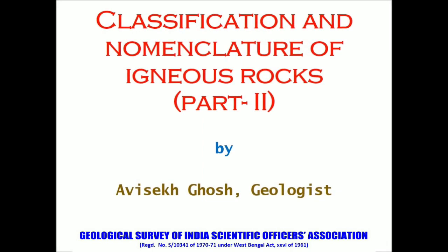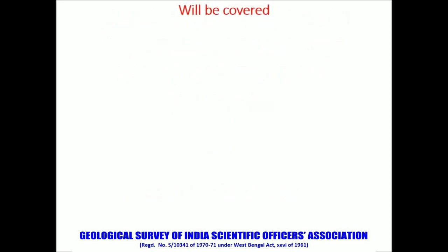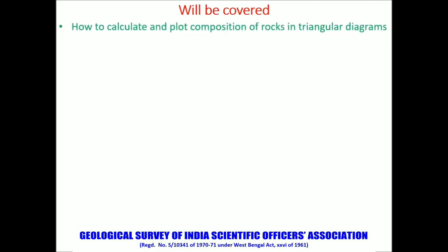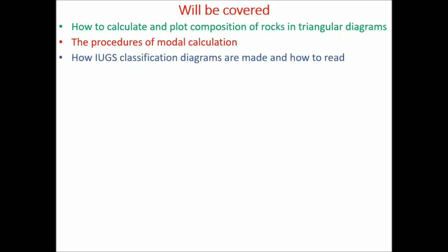This is Part 2 of the lecture on classification and nomenclature of igneous rocks. In Part 1, we covered up to the IUGS classification. In this part, the topics to be covered are: how to calculate and plot composition of rocks in triangular diagrams, procedures of modal calculation, how IUGS classification diagrams are made and how to read them, and when and how to add prefix names to IUGS nomenclature of igneous rocks without violating the norms of nomenclature.